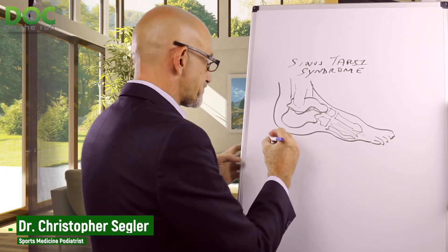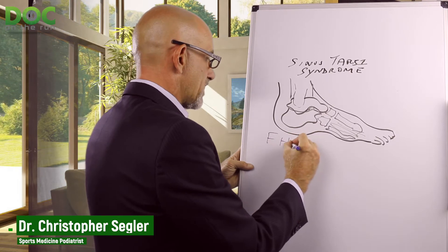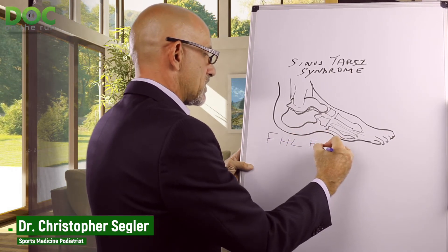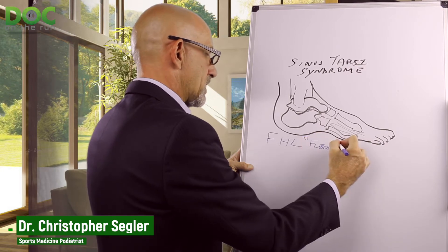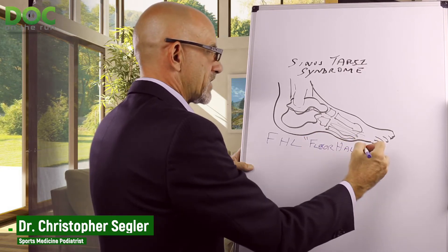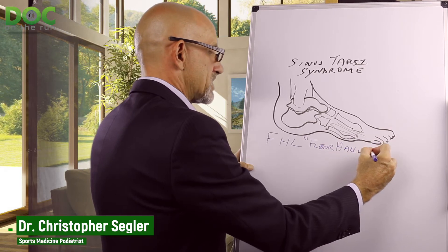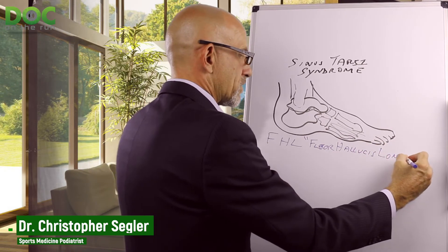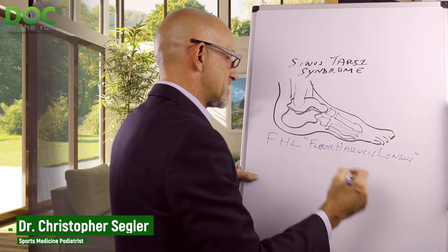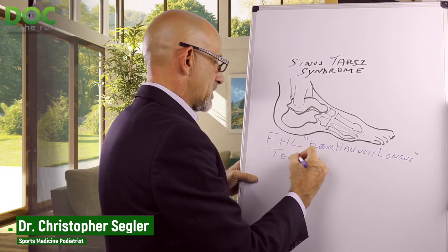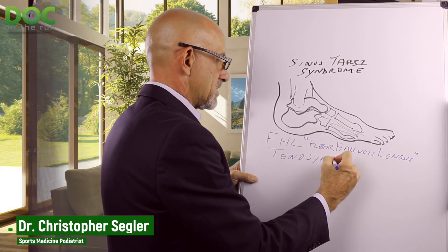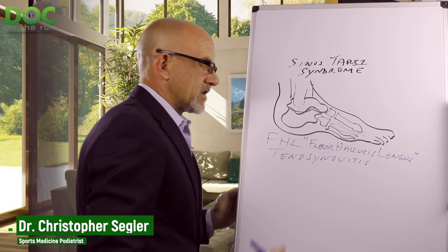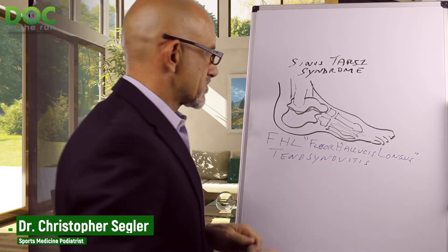So what does that mean in terms of this other condition — the FHL, or flexor hallucis longus tenosynovitis? 'Flex' means to pull down, and 'hallux' is the name for the big toe. There's a long one and a short one — we're talking about the long one that attaches to the end of your toe. Tenosynovitis is the inflammation of the lining of the tube or sheath that goes around the tendon.